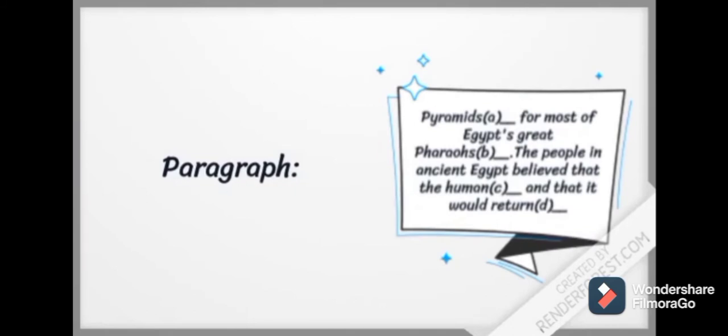Pyramids were built for most of Egypt's great pharaohs between 2700 and 1600 BC. The people in ancient Egypt believed that the human spirit is immortal and that it would return to a well-preserved body after death.